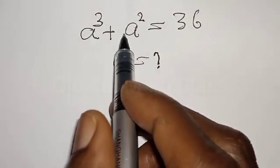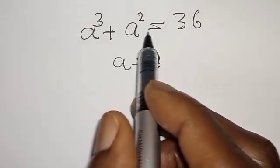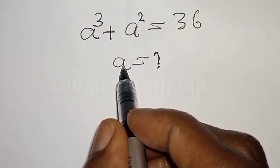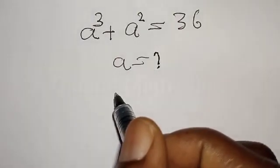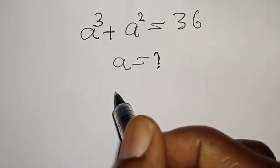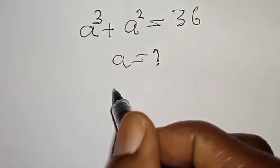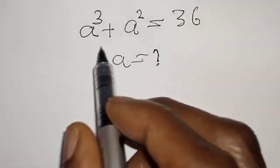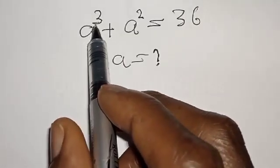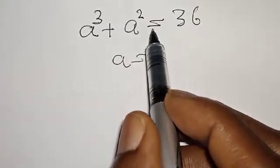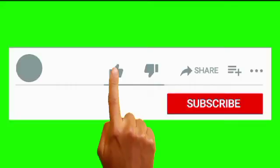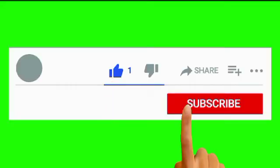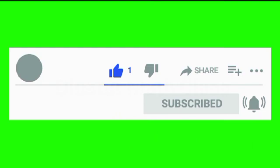If a raised to power 3 plus a squared is equal to 36, then a is equal to what? Hi everyone, welcome to my class. In today's class we want to find the value of a from this given equation: a raised to power 3 plus a squared is equal to 36. Before we proceed, please don't forget to like, share, comment and subscribe.